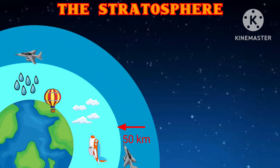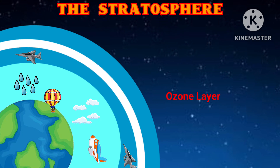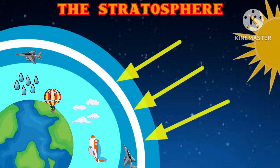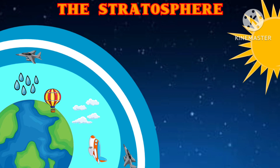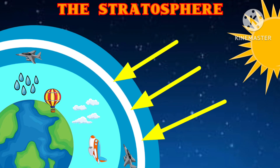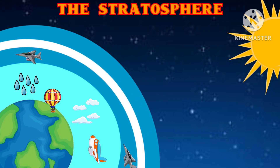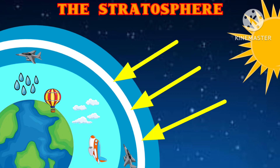The stratosphere extends upward from the tropopause to about 50 kilometers. It contains much of the ozone layer in the atmosphere. The increase in temperature with height occurs because of absorption of ultraviolet radiation from the sun by this ozone. By absorbing dangerous UV radiation, the ozone in the stratosphere protects us from skin cancer and other health damage.